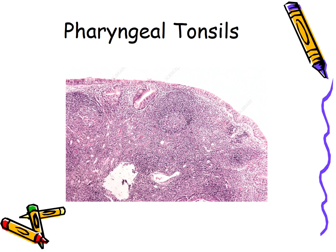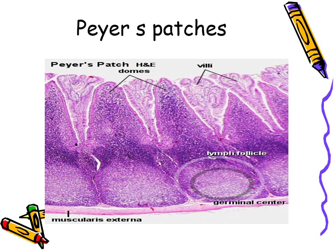Aggregates of lymphoid follicles are present throughout the gut, forming the gut-associated lymphoid tissue (GALT), also called mucosa-associated lymphoid tissue (MALT). These isolated patches of lymphoid follicles are present in the lamina propria throughout the GI tract, but are most prominent in the ileum, where they are called Peyer's patches.